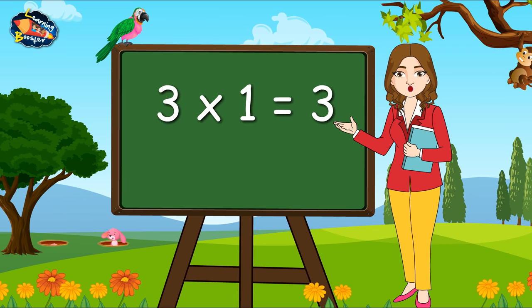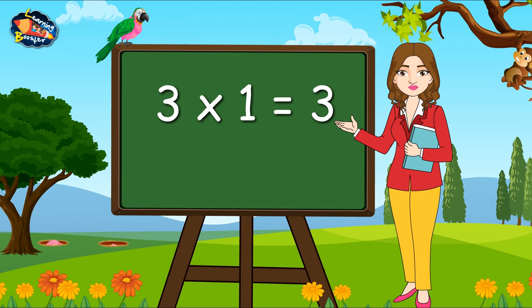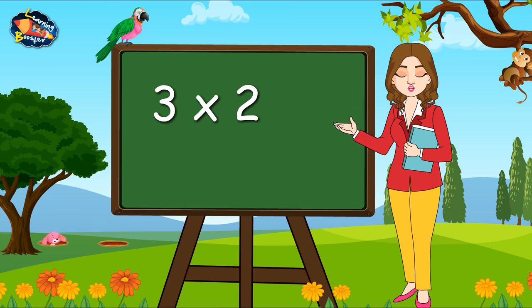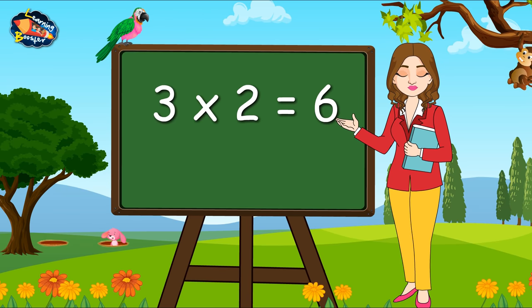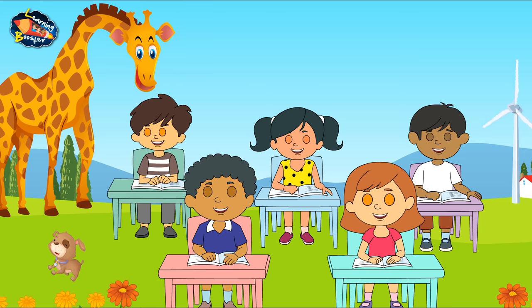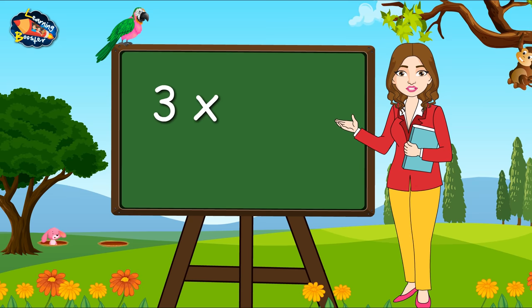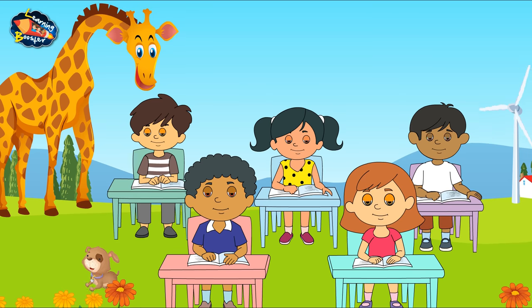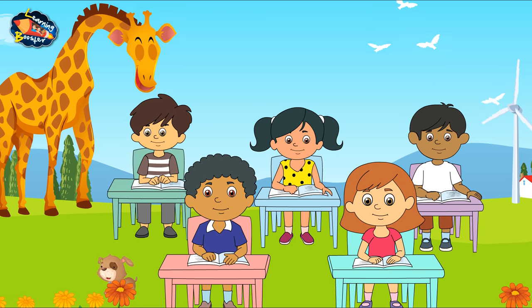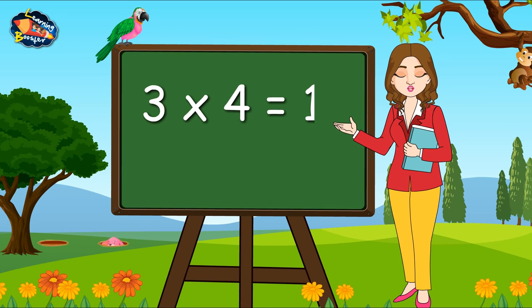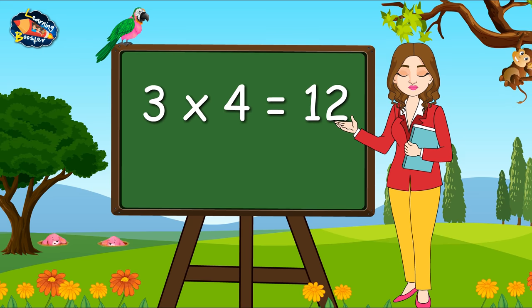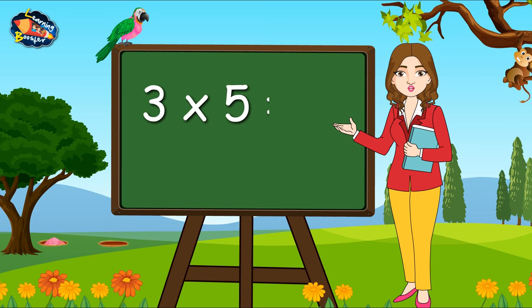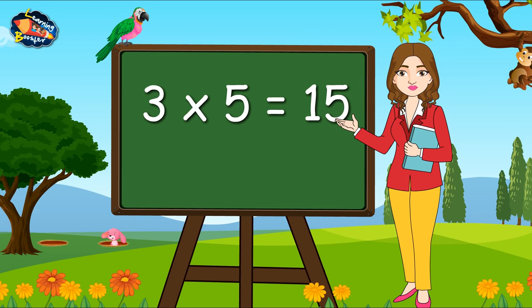Three ones are three. Three twos are six. Three threes are nine. Three fours are twelve. Three fives are fifteen.